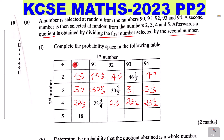The last row: 90 divided by 5 gives 18. 91 divided by 5 gives 18 and a fifth. Then 92 divided by 5 gives 18 and 2 fifths. Then 93 divided by 5 gives 18 and 3 fifths. Then 94 divided by 5 gives 18 and 4 fifths. That is all for Part 1.